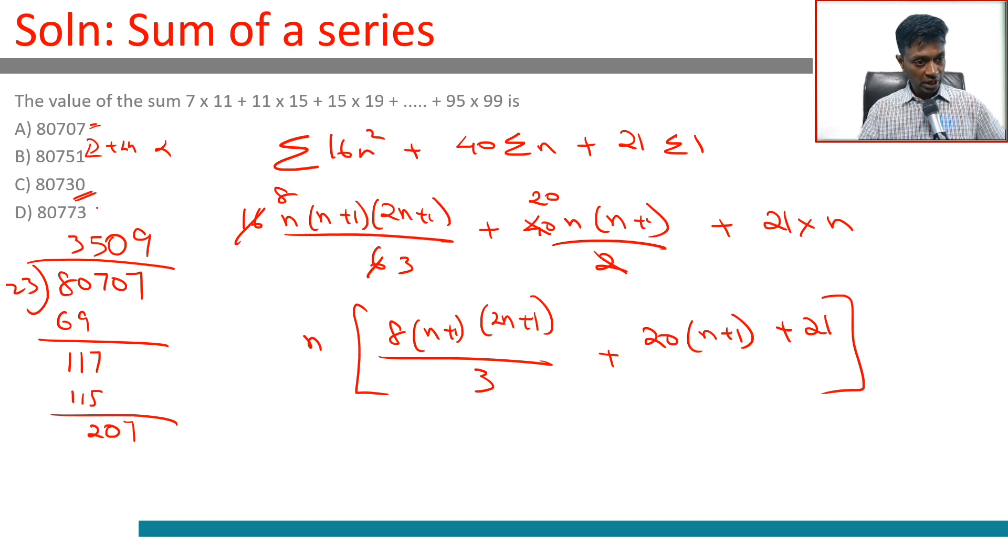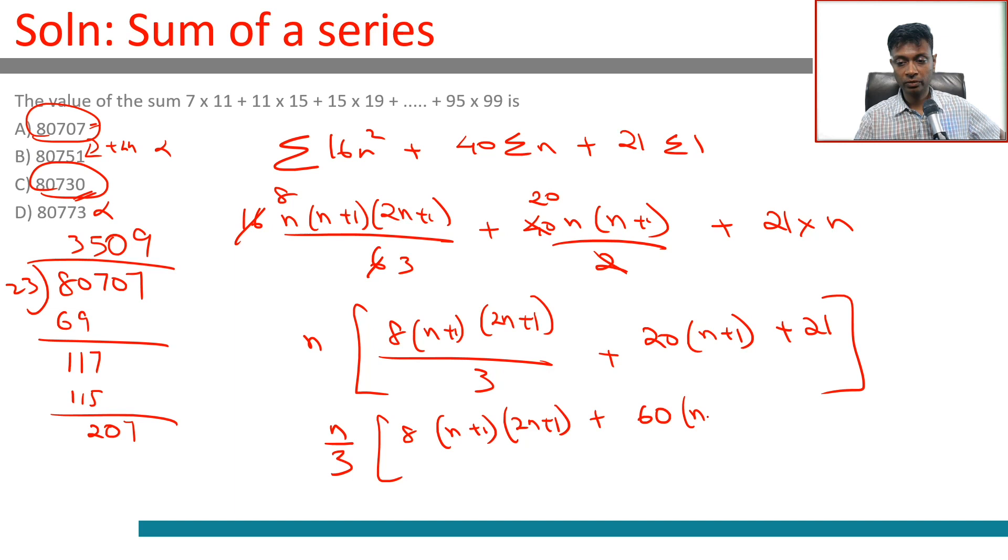80730 is a possibility. 80773, from 7 to 73 we're adding 66, this doesn't work. It's either this or this, so we might have to substitute and simplify. Taking n by 3 out, we get 8 into n plus 1 into 2n plus 1, plus 60 times n plus 1, plus 63.